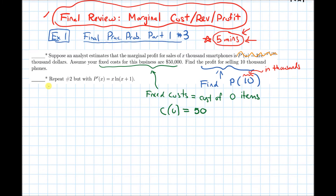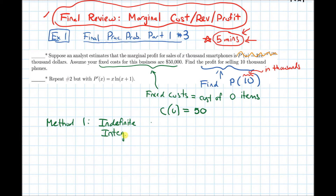Because the problem gives us the derivative of profit but we need the original profit function, we need to take an antiderivative. We can do this in two ways. Method one uses an indefinite integral, and later I'll talk about how to set this up with a definite integral.